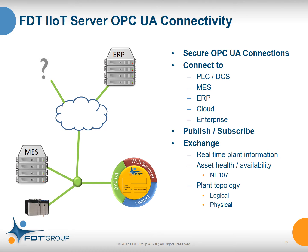For broader enterprise connectivity, we have OPC UA natively on the server. This can connect things like PLCs, MES applications, or ERP applications — regardless of whether they're in the cloud or somewhere within the enterprise — through the well-accepted OPC UA standard. We support the publish-subscribe methodology of OPC. The types of things you can exchange include real-time plant information, asset health or availability inquiries, or browsing and cataloging the plant topology in either a logical or physical view. You can also write data into FITS through this connectivity.